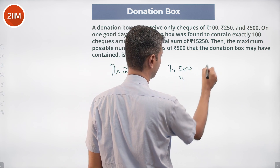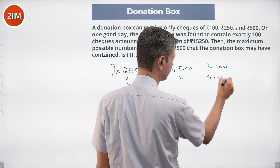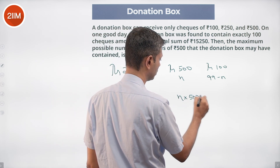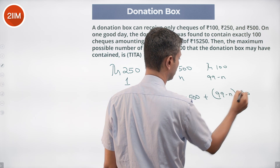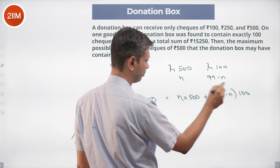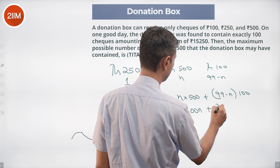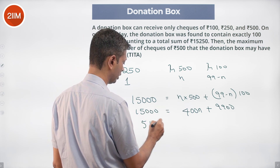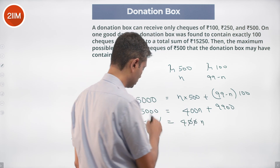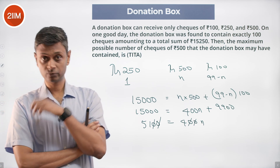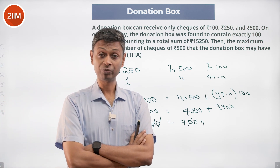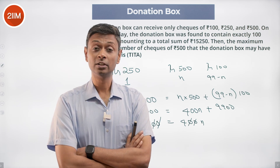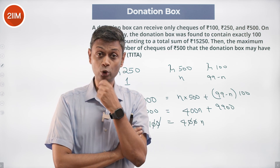So let's try: one 250-rupee note, n 500-rupee notes, and (99 minus n) 100-rupee notes. The 250-rupee note accounts for 250, leaving 15,000. So: 500n + (99 − n) × 100 = 15,000, which gives 400n + 9,900 = 15,000, so 400n = 5,100, meaning n = 51/4 = 12.75. That doesn't work — we can't have 12.75 notes of 500 rupees, so one 250-rupee note is not possible.